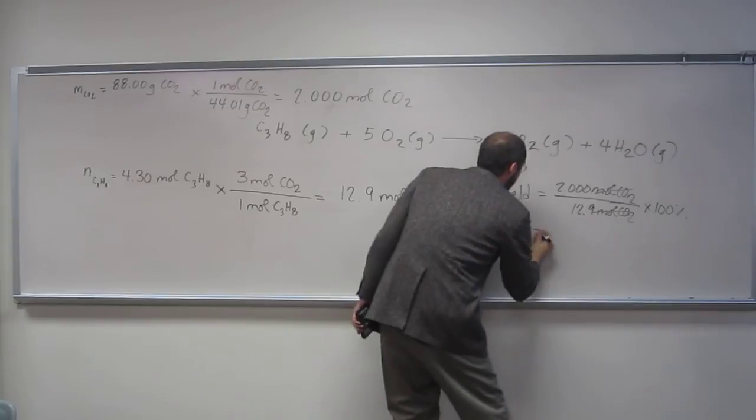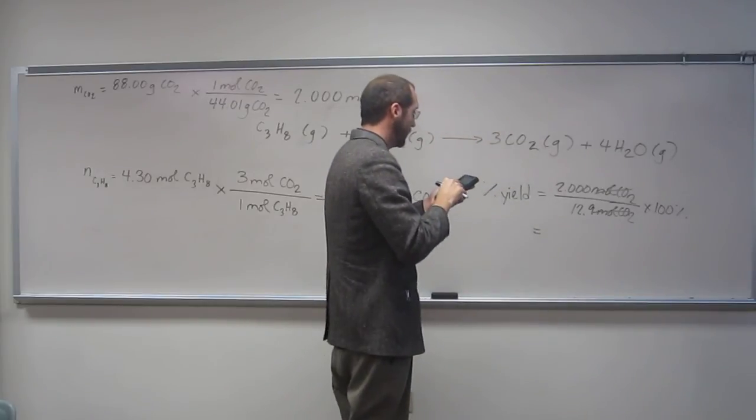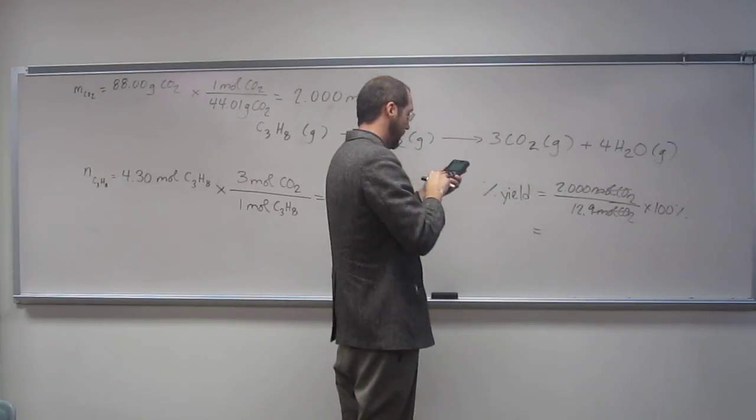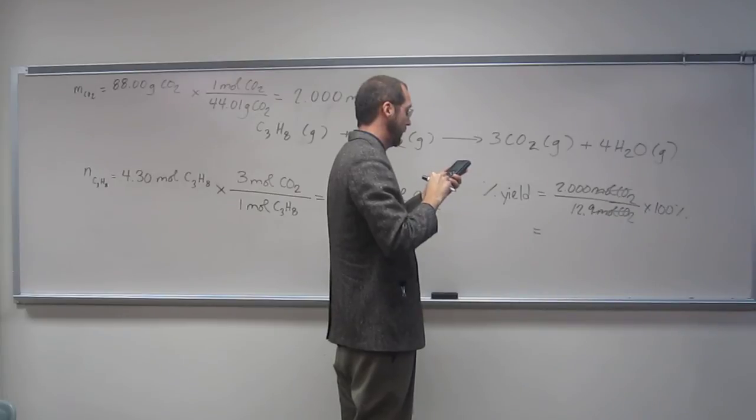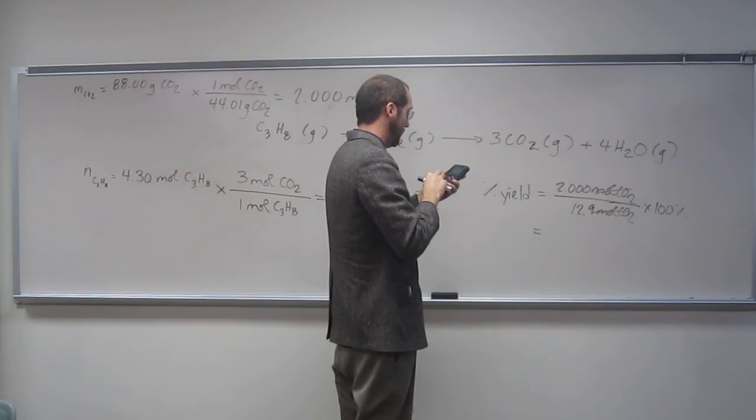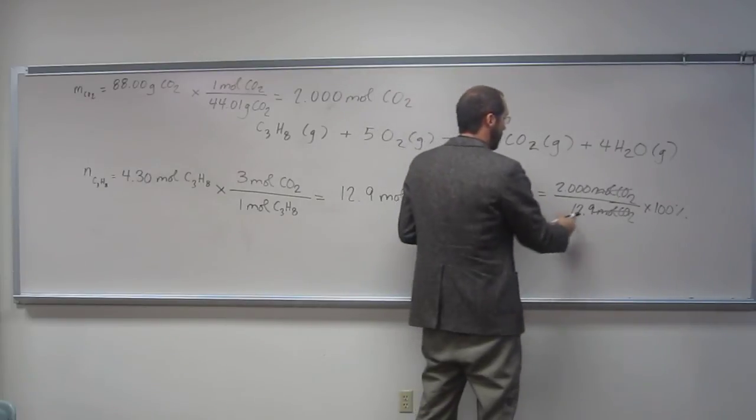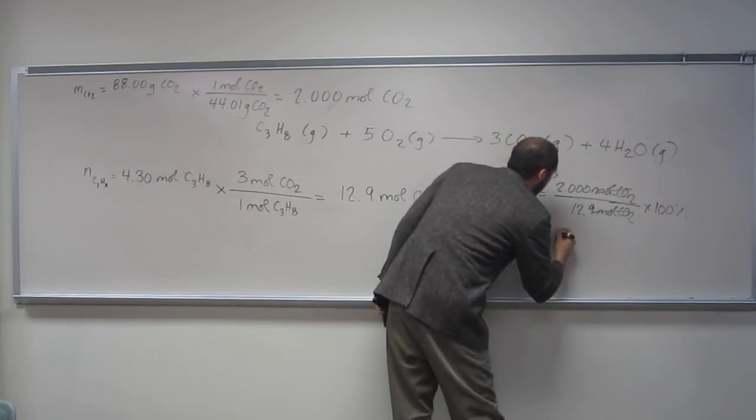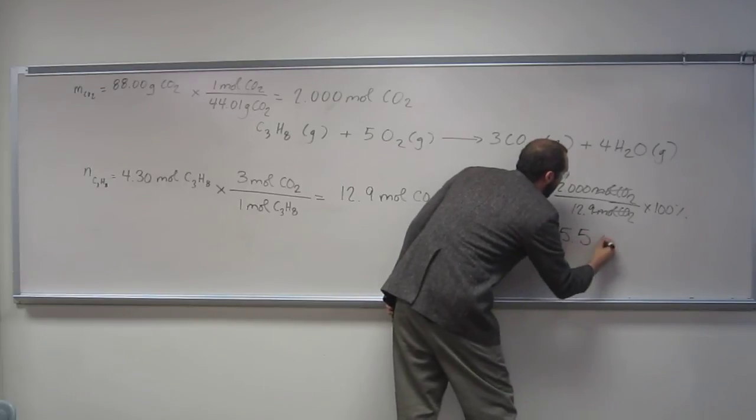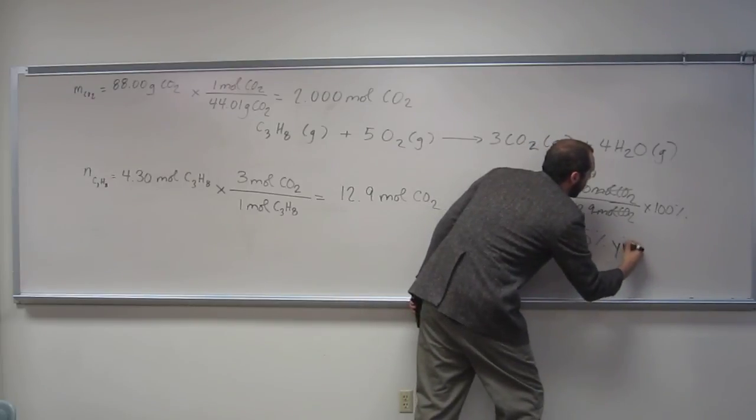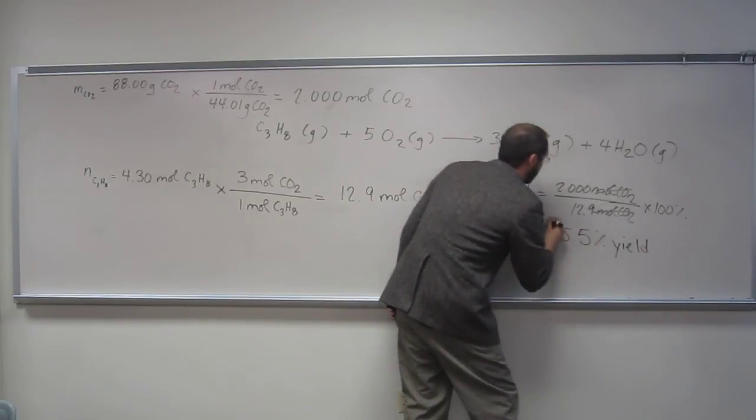That'll cancel out moles of CO2. So, divide that by 12.9 and multiply by 100. And, to 3 sig figs, I got a 15.5 percent yield on this reaction.